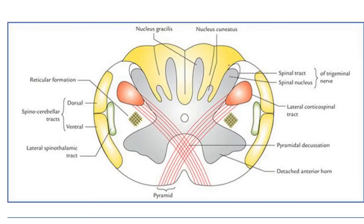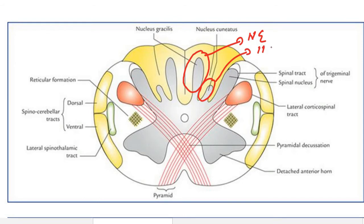The cross section at the pyramidal decussation level is similar to the spinal cord cross section, because as we go up the structure changes uniformly. At this level we can see the nucleus gracilis and the nucleus cuneatus beginning to form. These nuclei start forming at the lower level and will be completely formed at the sensory decussation level.